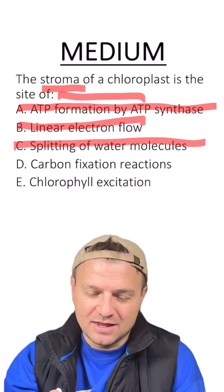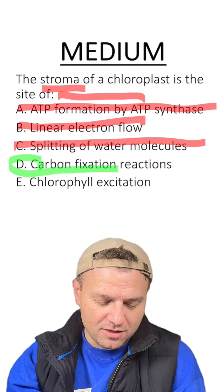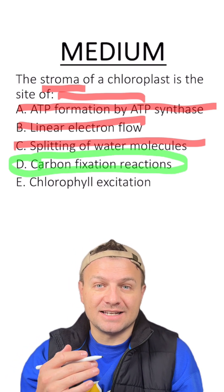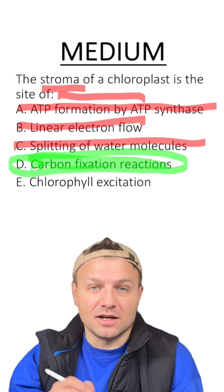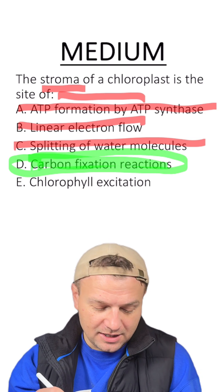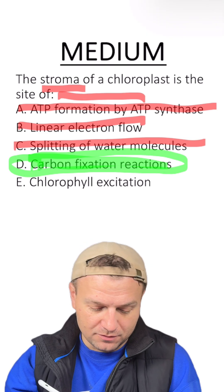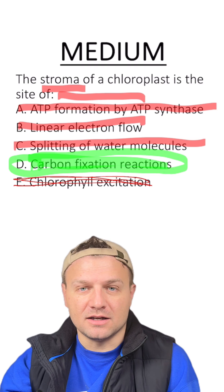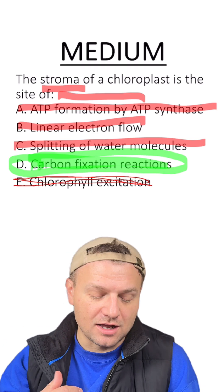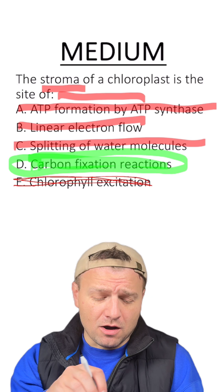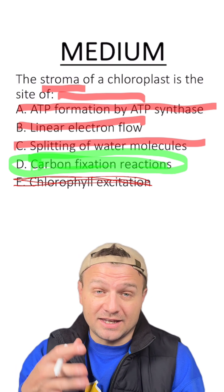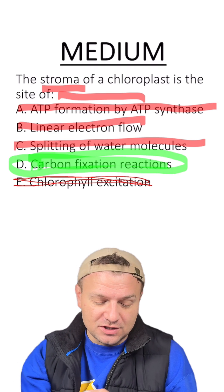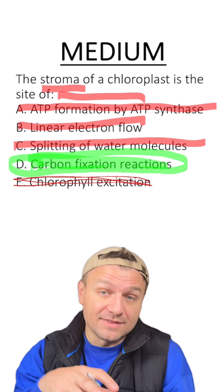D, carbon fixation — that sounds like our answer. Remember that carbon fixation occurs during the Calvin cycle, or the light-independent reactions, and that's going to primarily occur in the stroma. And then E, chlorophyll excitation — that's not the answer because that occurs during the light-dependent reactions along the thylakoid membrane, so that's out. This question is harder because it looks at the actual processes between the light-dependent and independent reactions and whether you know where they occur within the chloroplast.